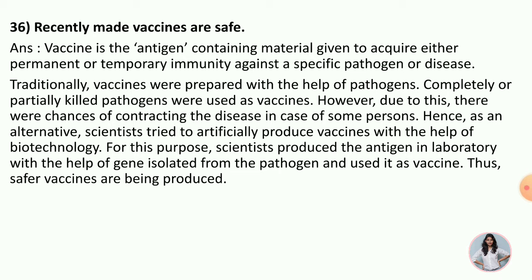The gene is isolated from the pathogen — that is, the pathogen which causes the disease — and used to produce antigens in the laboratory. Thus, safer vaccines are being produced. This method of gene isolation is used in the vaccines that are now being made safely. Hence, recently made vaccines are safe.